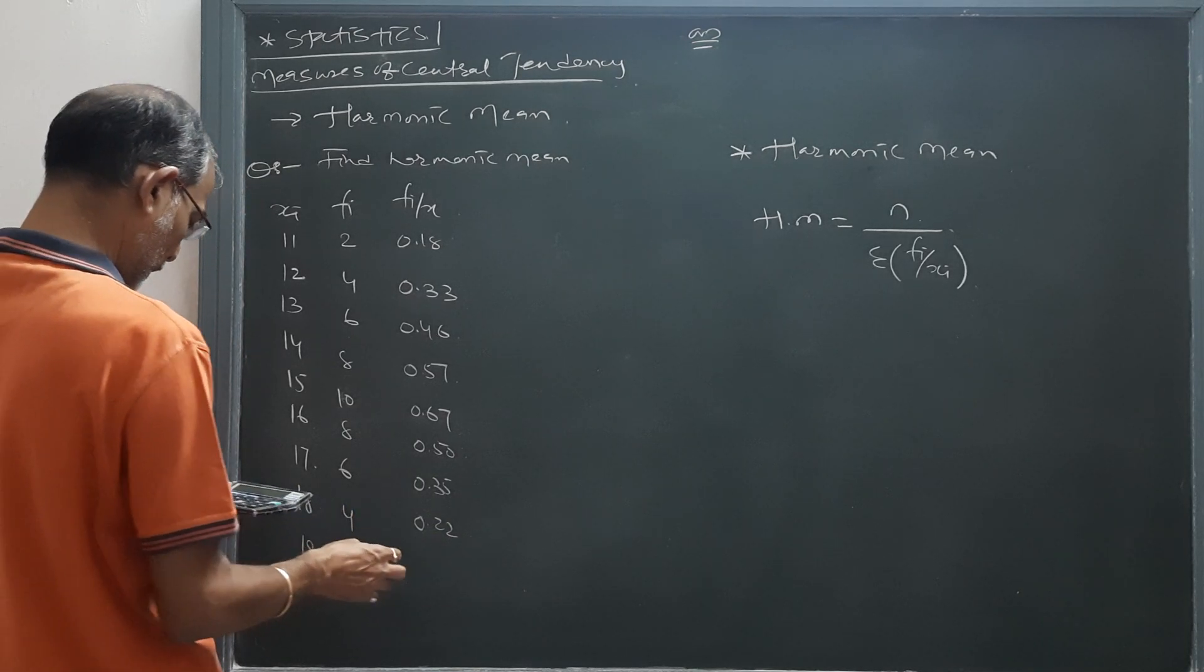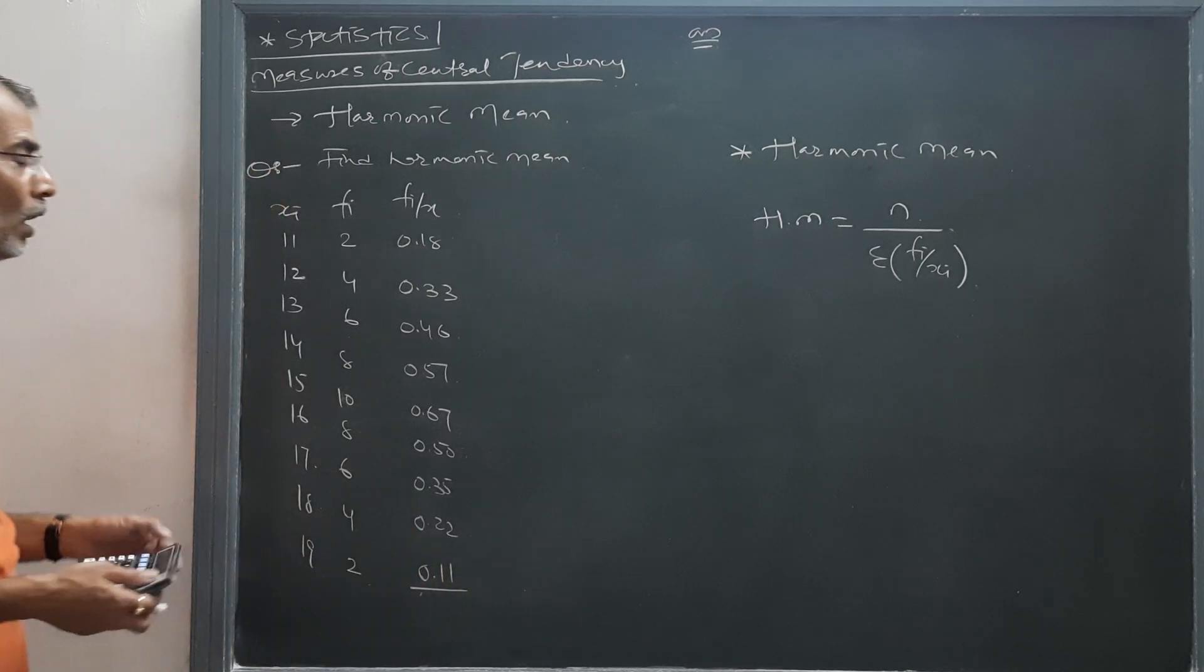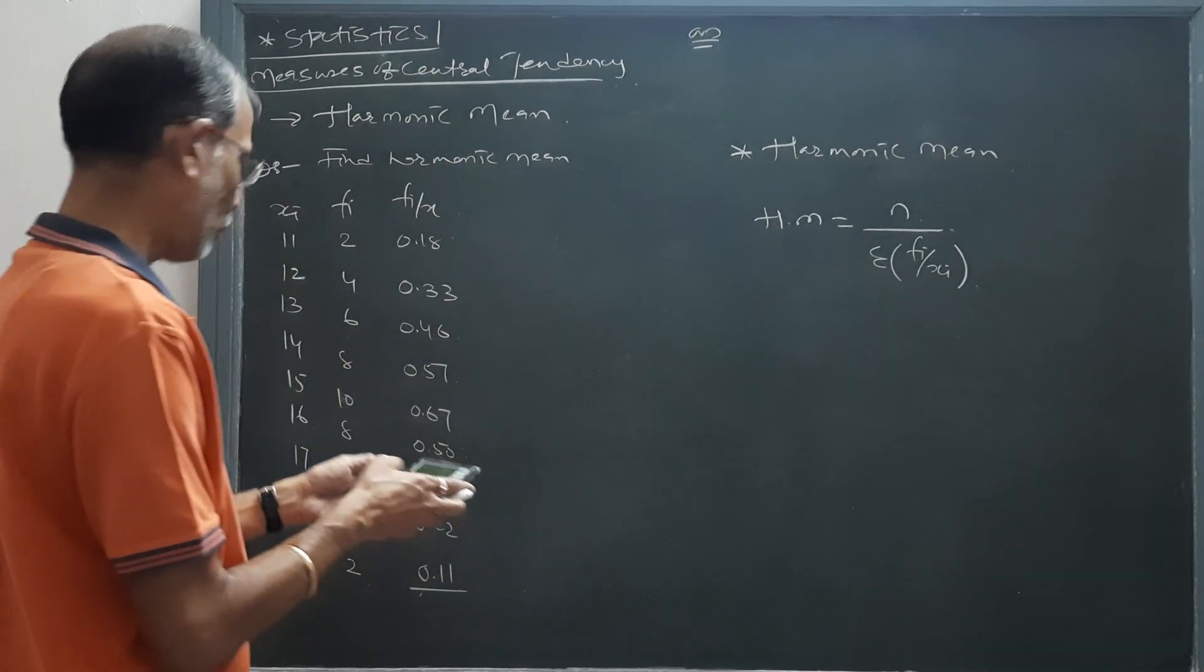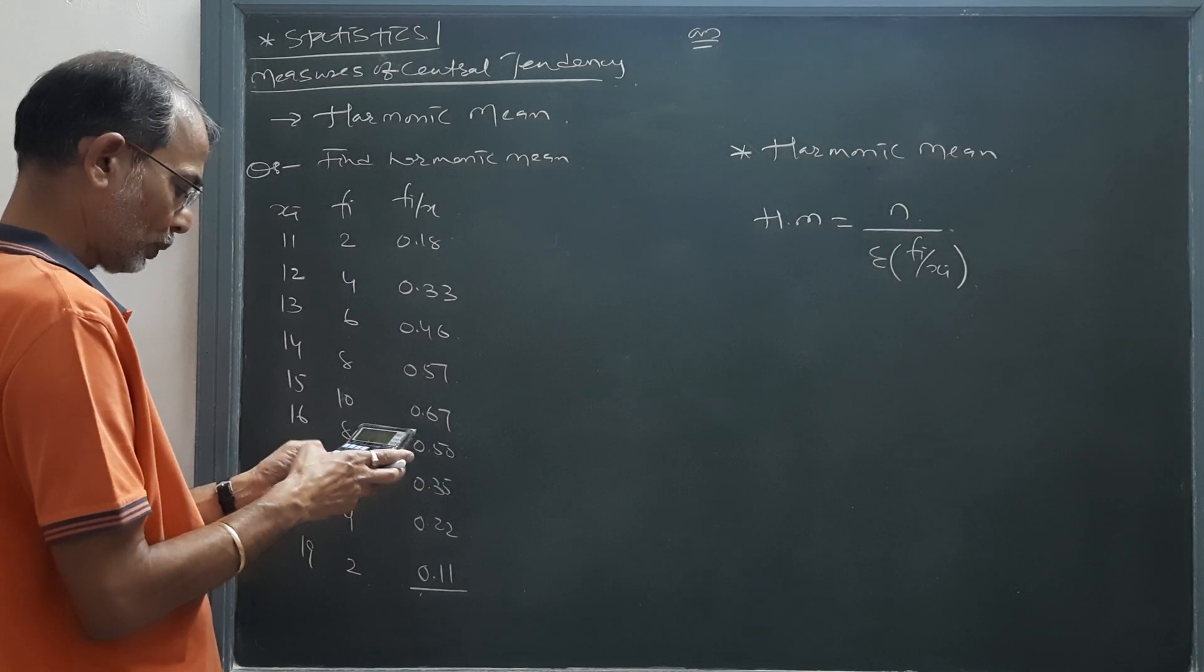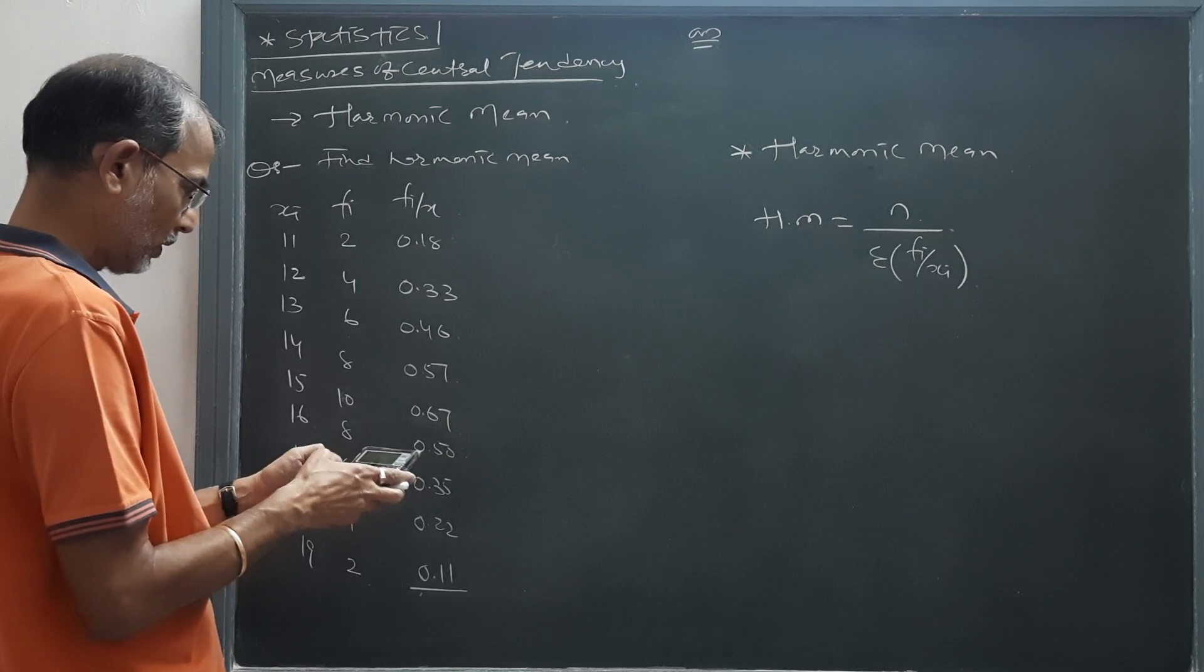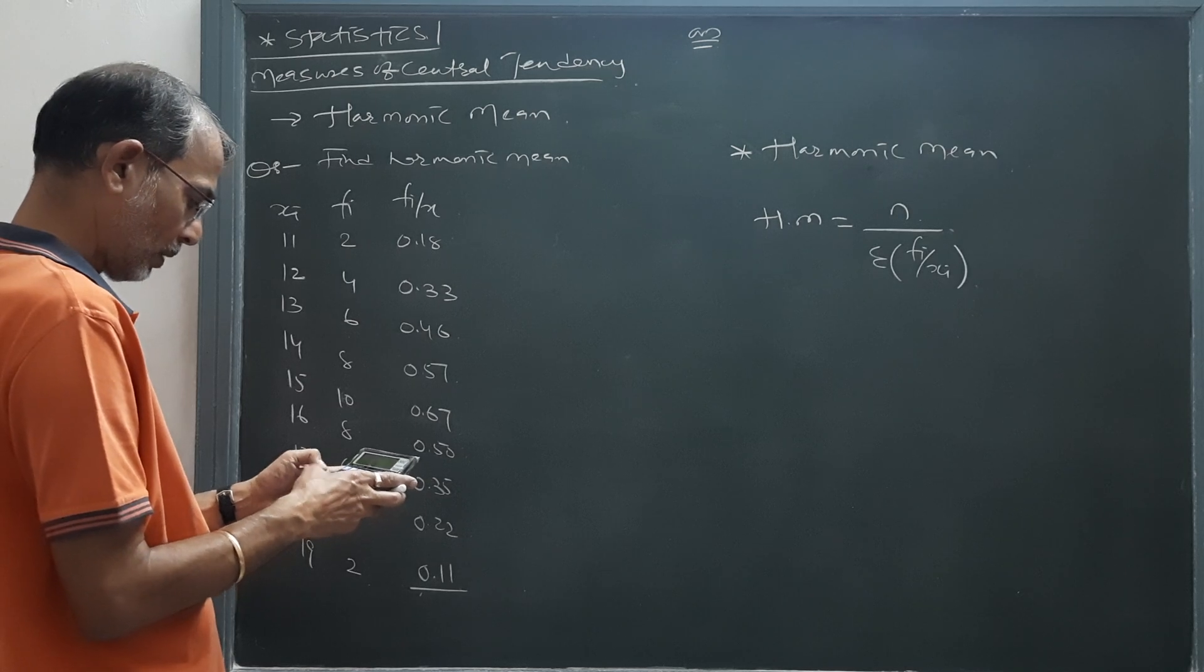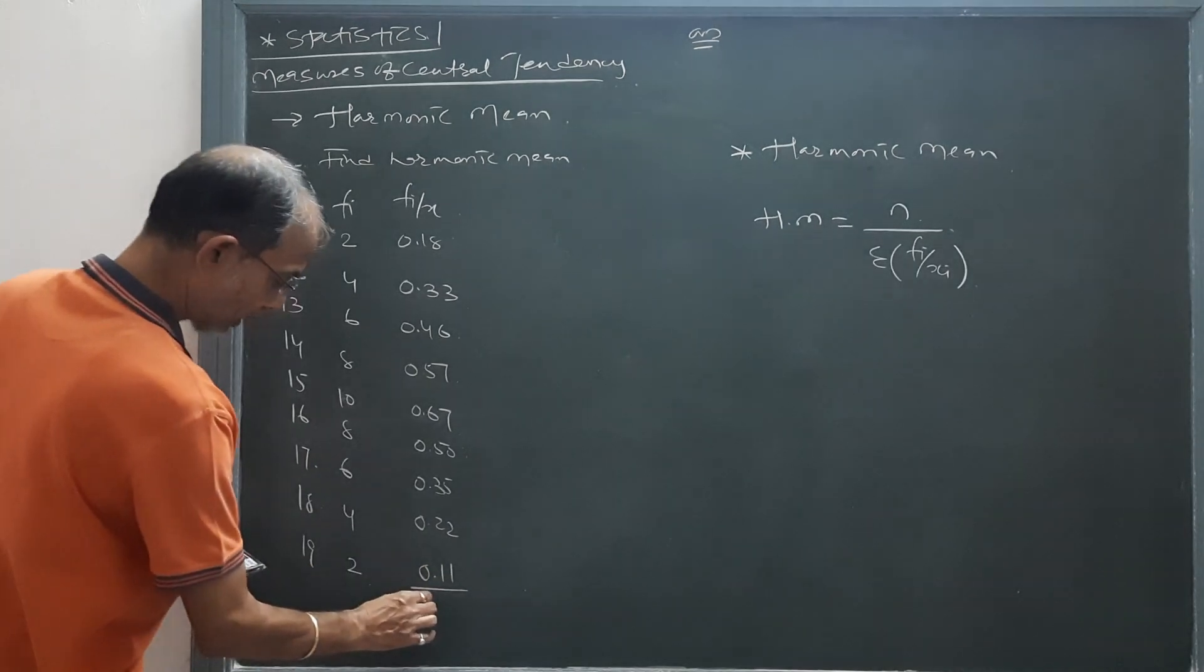Now we have to find the sum of this column. That will be 0.18 + 0.33 + 0.46 + 0.56 + 0.57 + 0.67 + 0.50 + 0.35 + 0.22 + 0.11. Now that is 3.39.